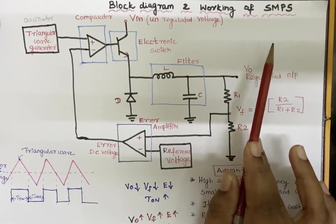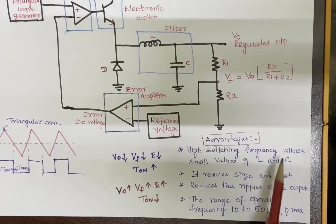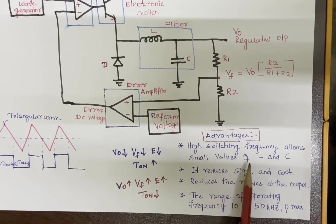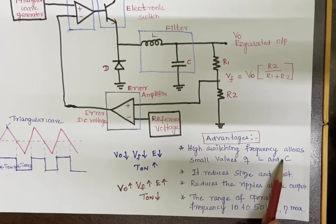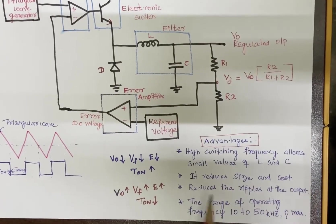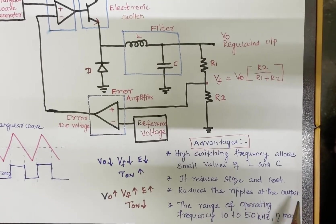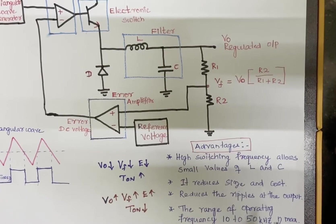We have some advantages: high switching frequency allows smaller values of L and C, thereby reducing size, cost, and weight. It also reduces the ripples at the output, so we get constant DC regulated output.